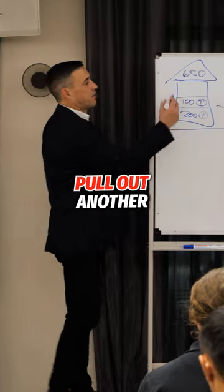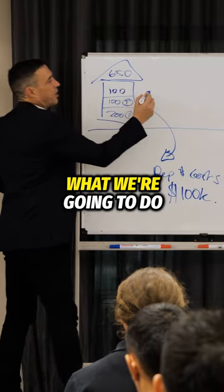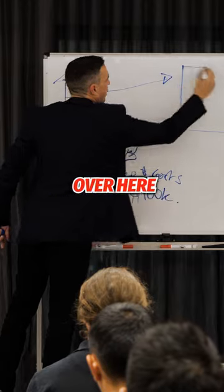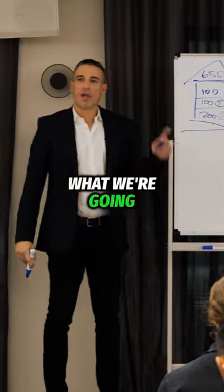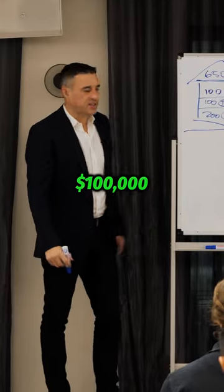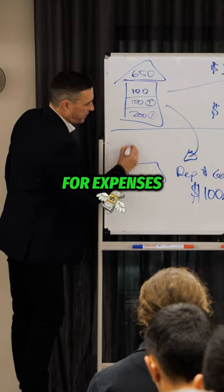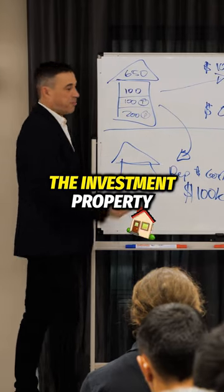The next thing you can do is pull out another $100,000. What we're going to do is come and sit it in an offset account over here. That $100,000 is only going to be used for expenses associated with the investment property.